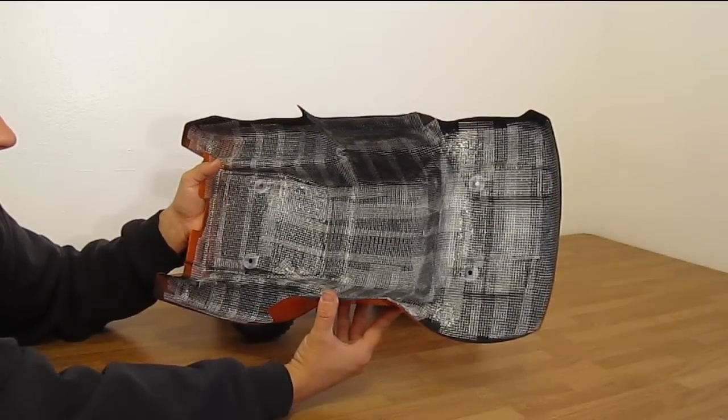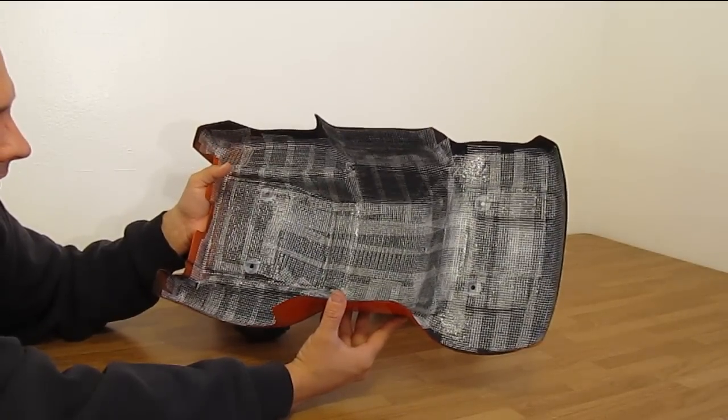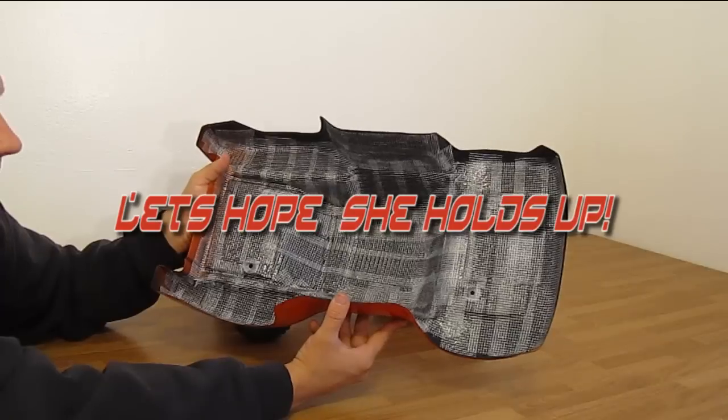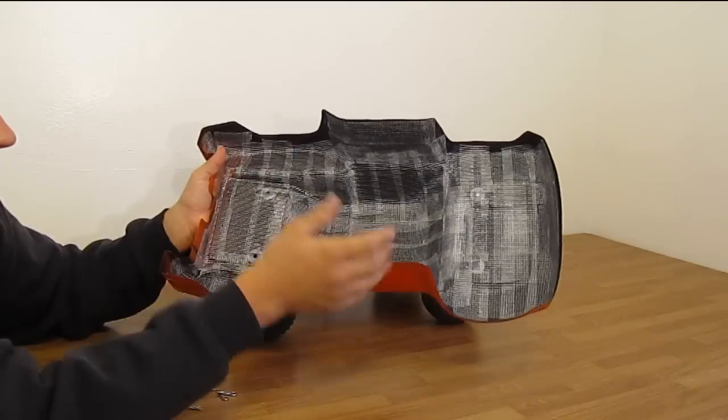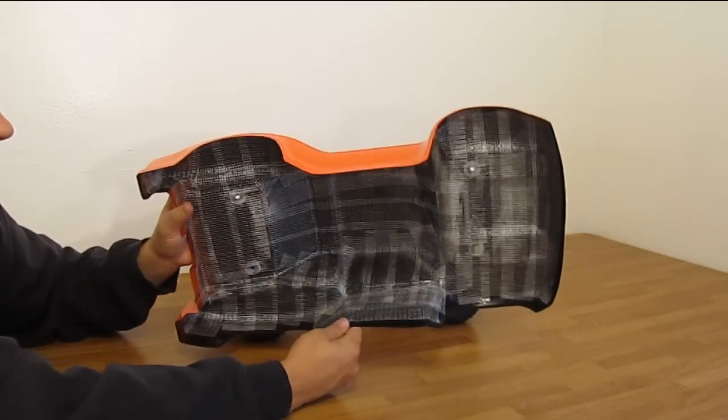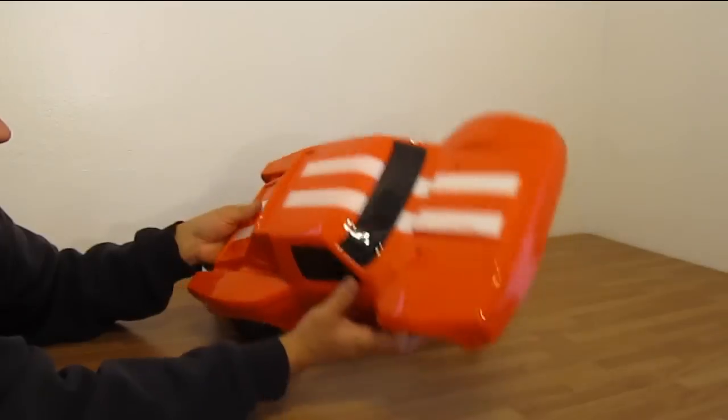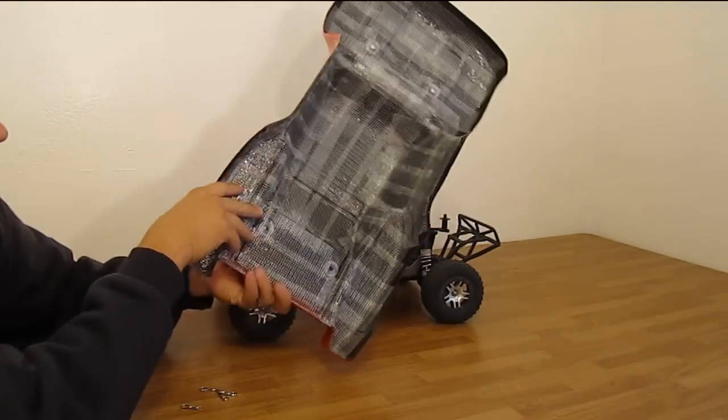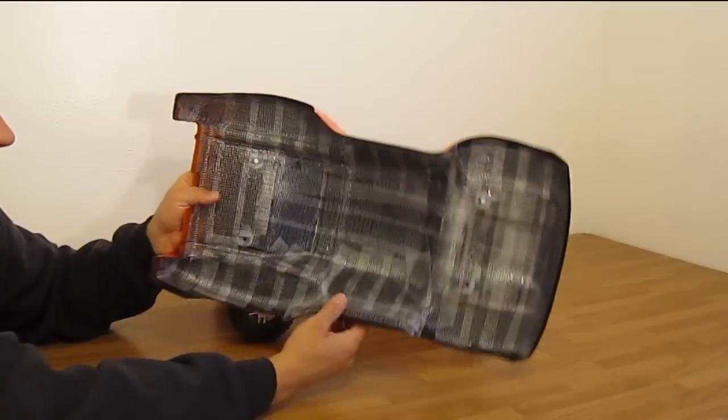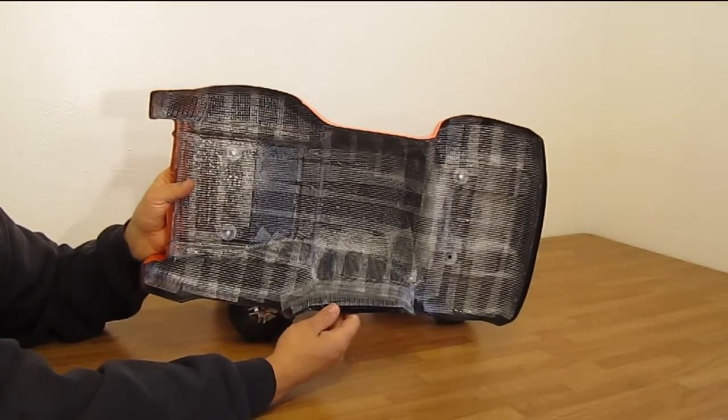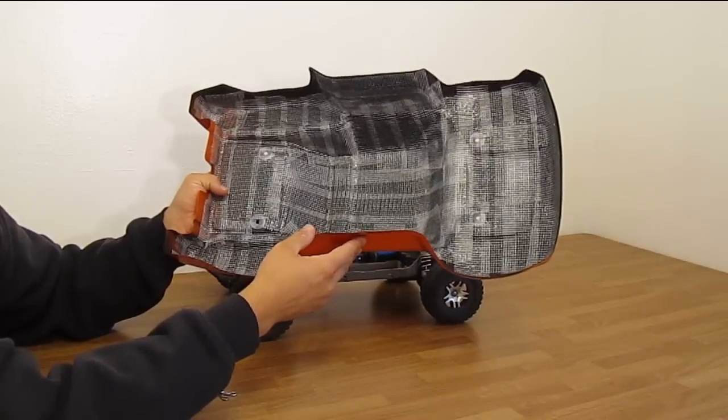It took about one and a half to two tubes of shoe goo, took about two and a half hours over a week, about four times to get it all done. It's pretty strong. I'm going to see how well it holds up. That's the body with the shoe goo pretty much over the whole body. Time to go test it out.